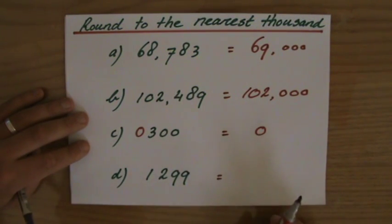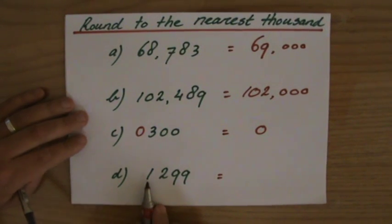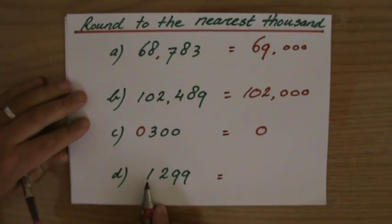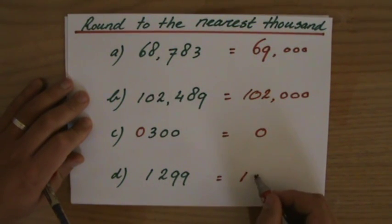The last one, 1,299. Where are my thousands? Over here. It's the 1,000. It stays a one or goes up to a two. It depends on the next number. It's lower than a five, so it's going to stay a one.